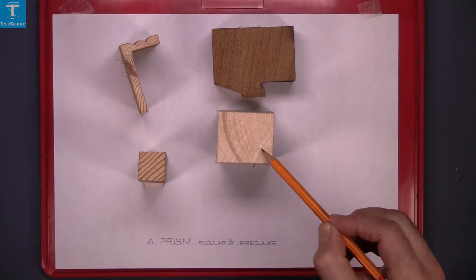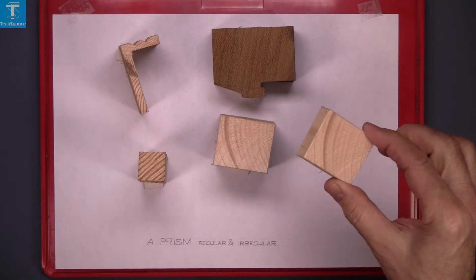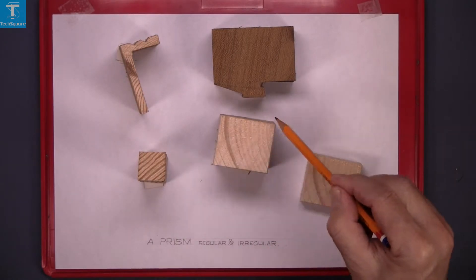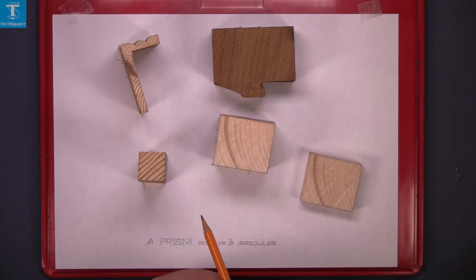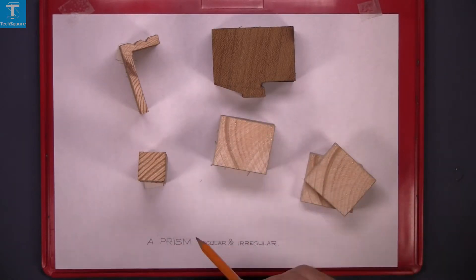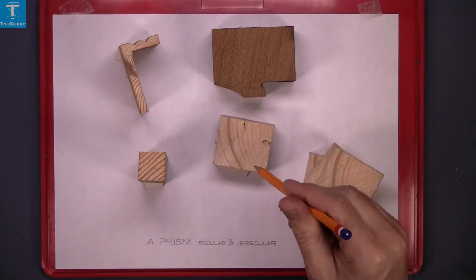This is a prism here. It's an irregular prism. If I cut a section of this, the shape that's left here is the same shape as we started off with. Again, another section, it's the same shape. So that's a prism. This is an irregular prism.